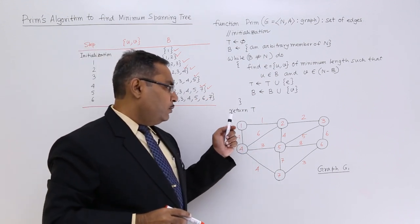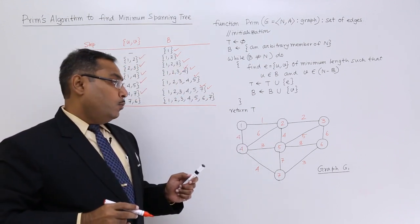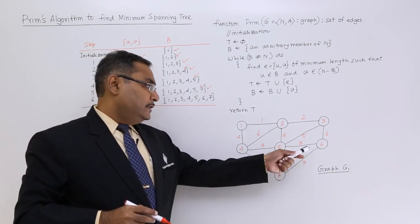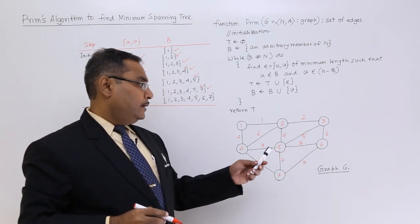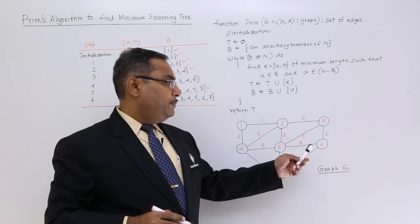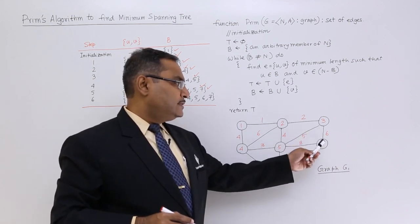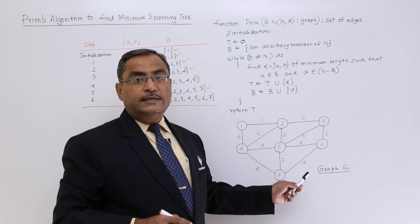Now we are having 1, 2, 3, 4, 5, 7. I think 6 is the only node we are having which is not included in b. Here this weightage is 8, here this weightage is 6, and here this weightage is 3.